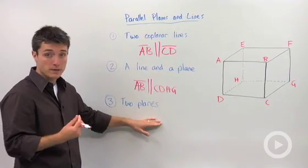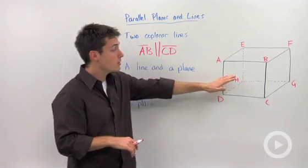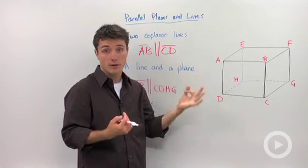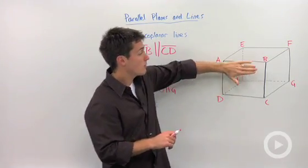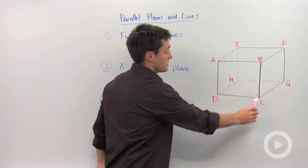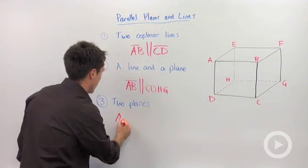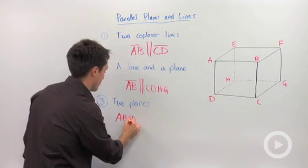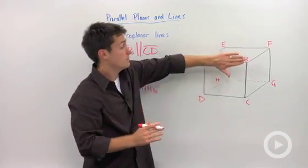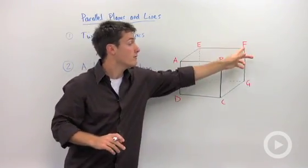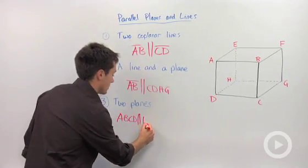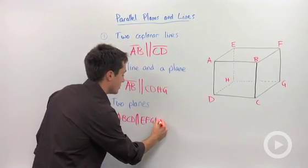And last, what about two planes? Well, since we have a cube, we have three pairs of parallel planes. So we could start off with our front plane ABCD is parallel to the face that is opposite to it, EFGH.